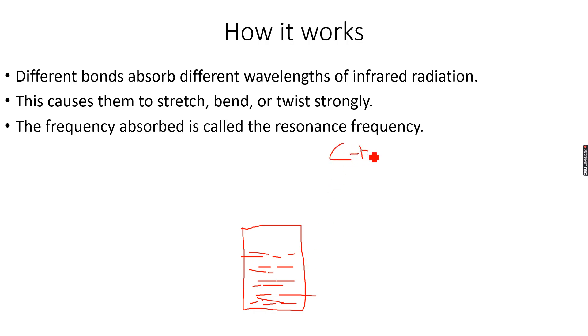There can be C-H bonds, C-C bonds, carbon-carbon double bonds, carbon-oxygen double bonds, carbon-oxygen single bonds, O-H bonds, and so on. Every different bond absorbs a different wavelength of infrared radiation. Absorbing that particular wavelength, the bond stretches, bends, or twists very strongly. The frequency absorbed is called the resonance frequency.